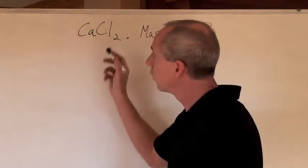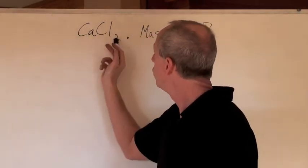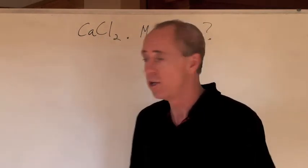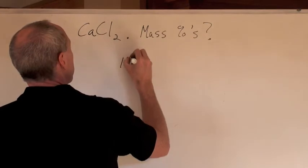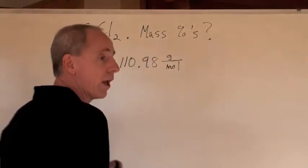So for calcium chloride, when you do the molar mass of 40.08 for calcium and 2 times 35.45, the molar mass of chlorine, you're going to get a molar mass of 110.98 grams per mole.